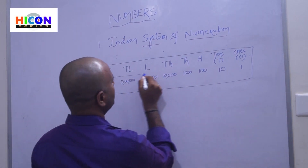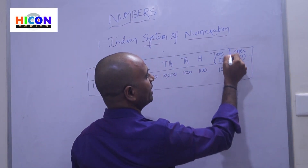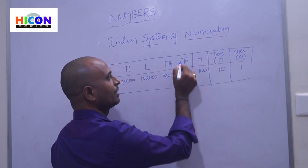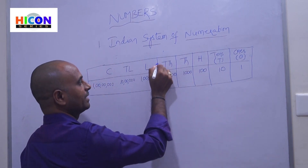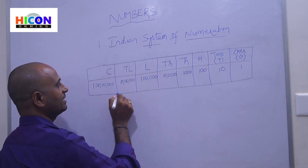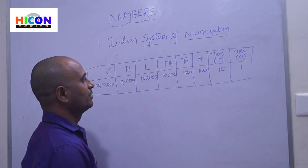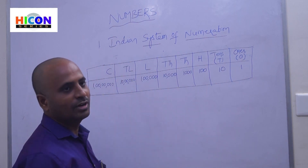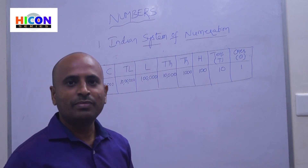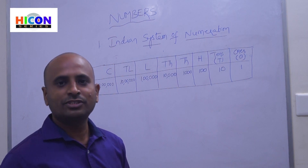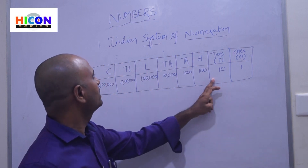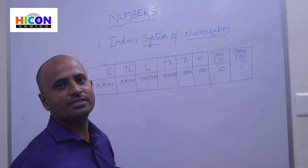This is the place value chart for the Indian system of numeration: ones, tens, hundreds, thousands, ten thousands, lakh, ten lakhs, and one crore. By using this place value chart, we can write number names for any given number. Let us see one example of how to write the number name for a given number.